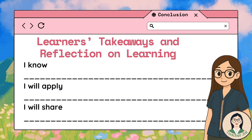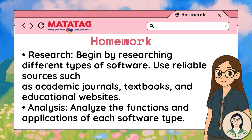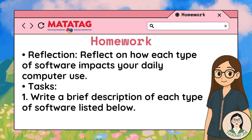Homework — research: begin by researching different types of software. Use reliable sources such as academic journals, textbooks, and educational websites. Analysis: analyze the functions and applications of each software type. Reflection: reflect on how each type of software impacts your daily computer use.